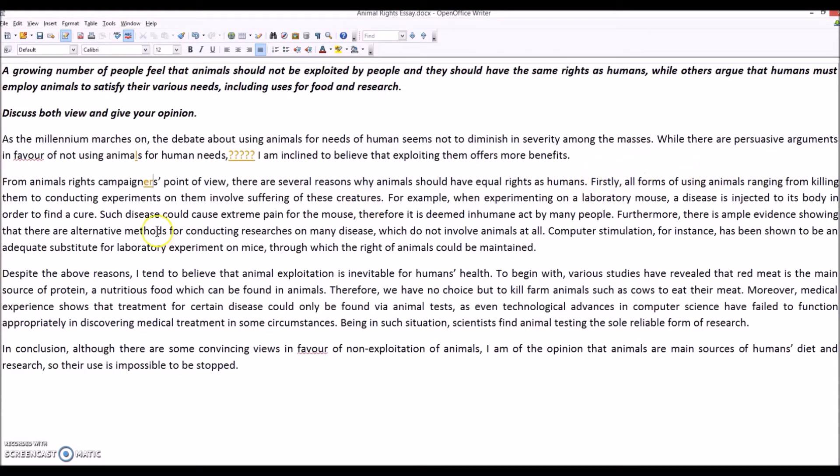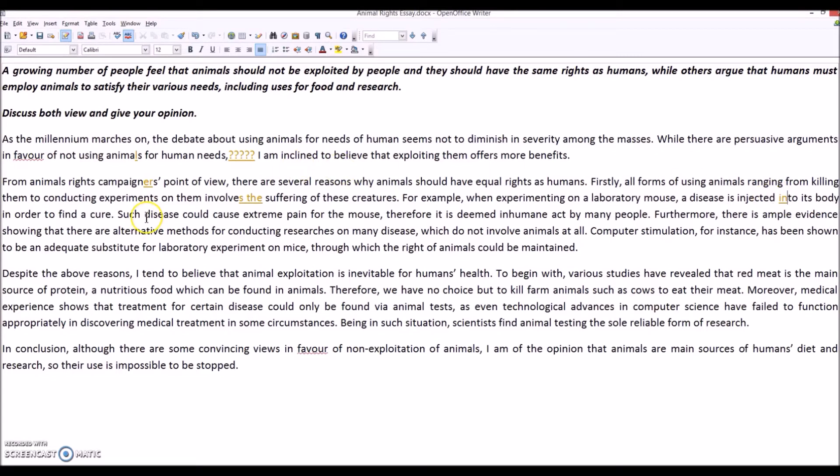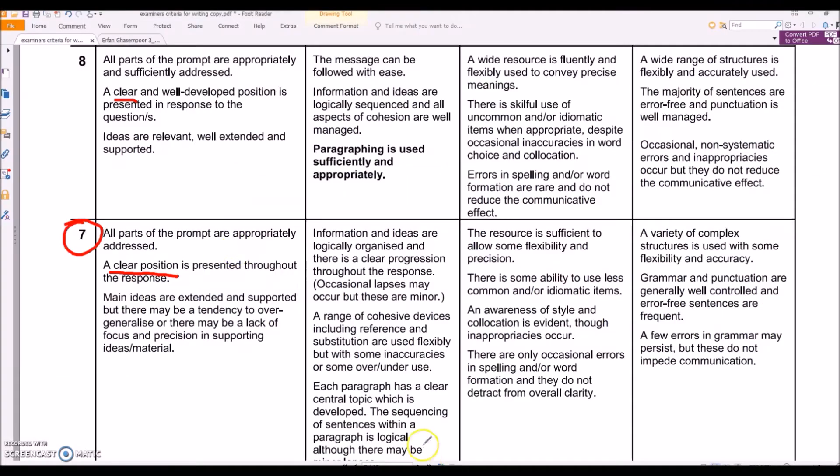From animal rights campaigners' points of view, there are several reasons why animals should have equal rights as humans. Okay, good. Firstly, all forms of using animals ranging from killing them to conducting experiments on them involves the suffering of these creatures. It's not good. They should have equal rights. First of all using animals. Suffering, for example, when experimenting on a laboratory mouse,